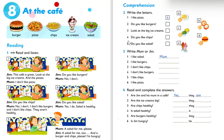Number four: do you like chips? Chips is letter A. Number five: do you like salad? Salad is letter C.